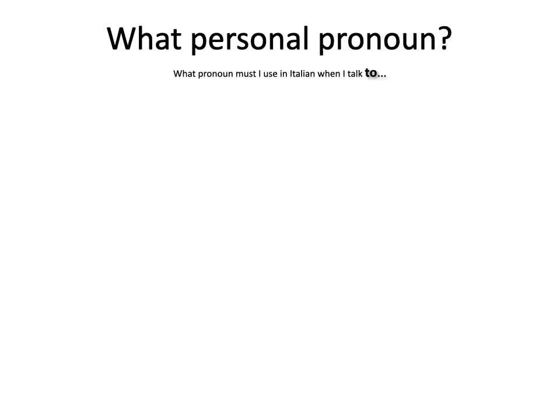How about talking to people? In this case we use a different set of pronouns. We have three possibilities: we have tu, we have Lei, and we have voi. Remember, we have tu when we're talking to one person and we want to be informal. We have Lei when we're talking to one person but we want to be formal. And we have voi when we want to talk to a group of people.